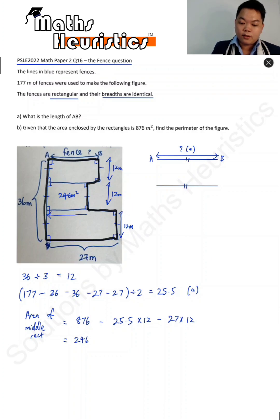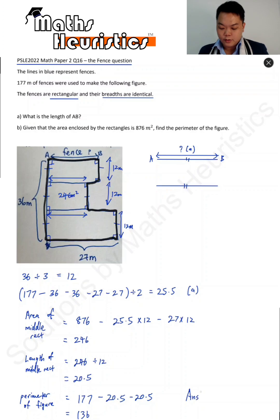And what else can we do from here? We can obtain these lengths by taking the area and dividing it by the breadth. That's going to give us 20.5. So the perimeter of the figure has to be 177 meters worth of fence, take away two of these 20.5s. So the answer for A will be 25.5 meters, and the answer for B will be 136 meters.